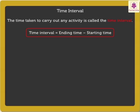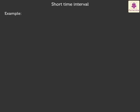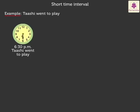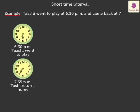Let's understand it better through an example. Tashi went to play at 6.30pm and came back at 7.35pm. How much time did she play in the evening?